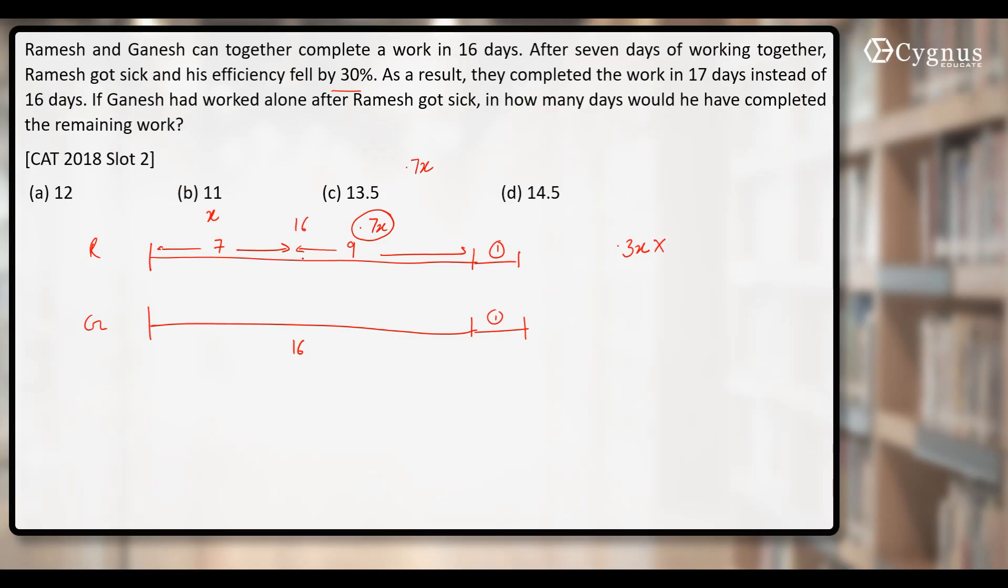How much work was left? Ramesh should have worked for remaining 9 days at full efficiency. But he worked at 0.7X. That means it will fall short by 0.3X into 9. That is 2.7X.